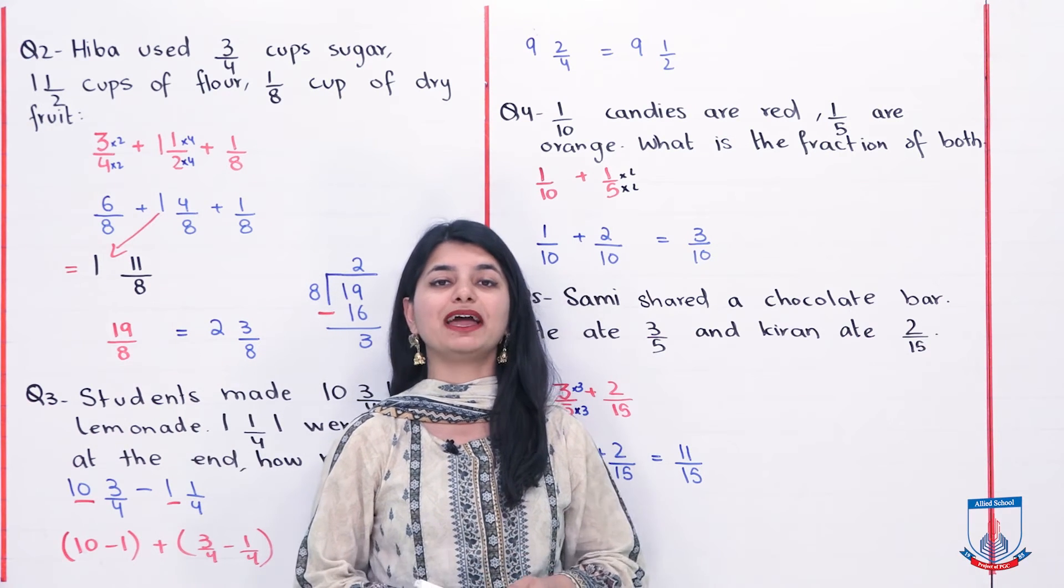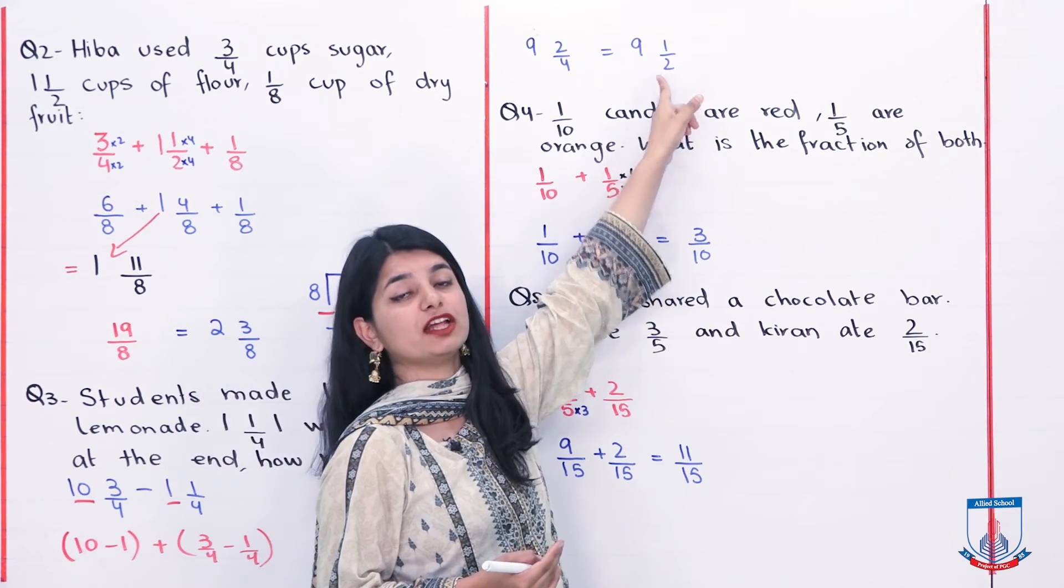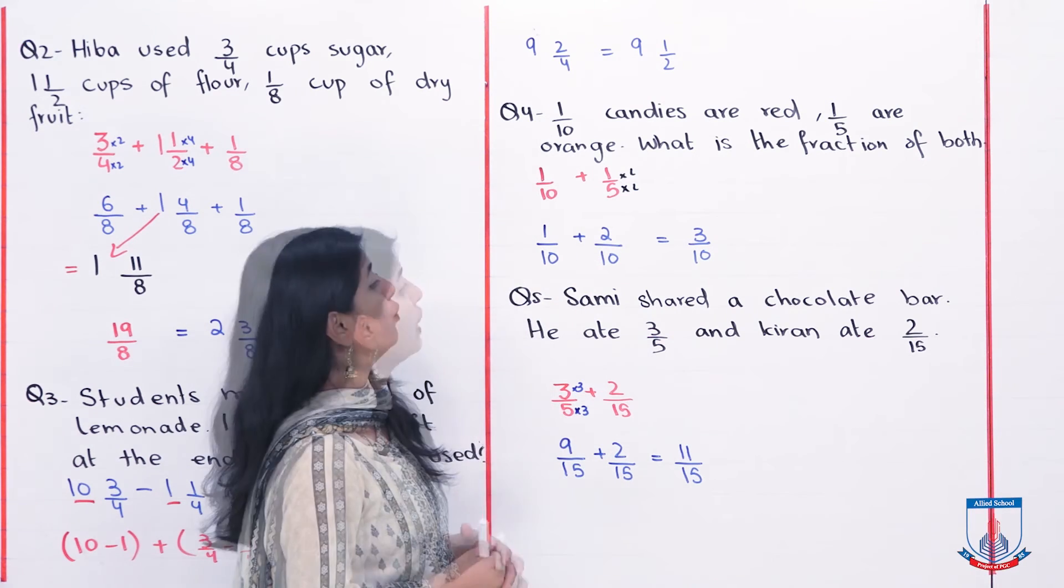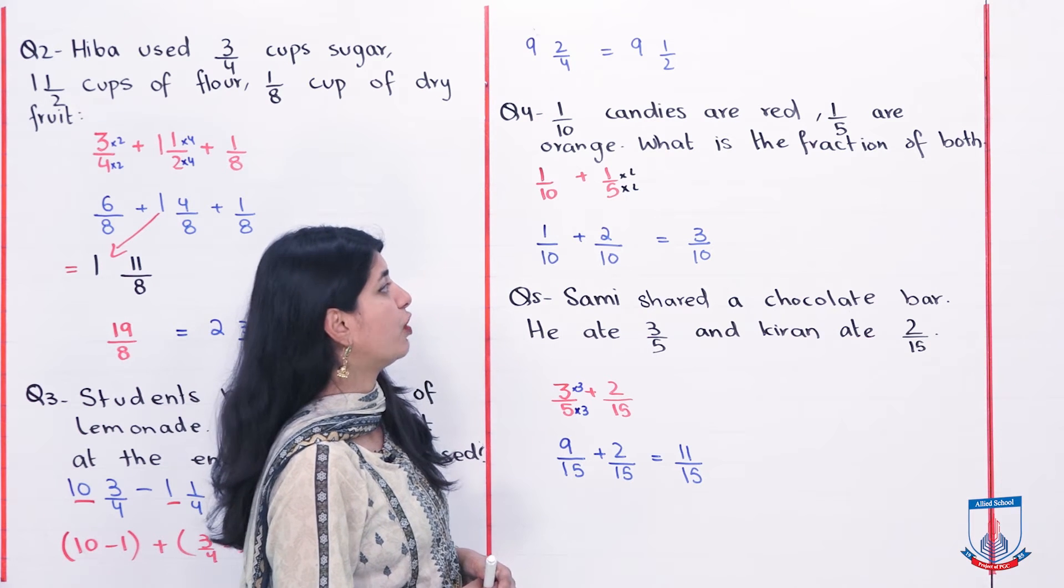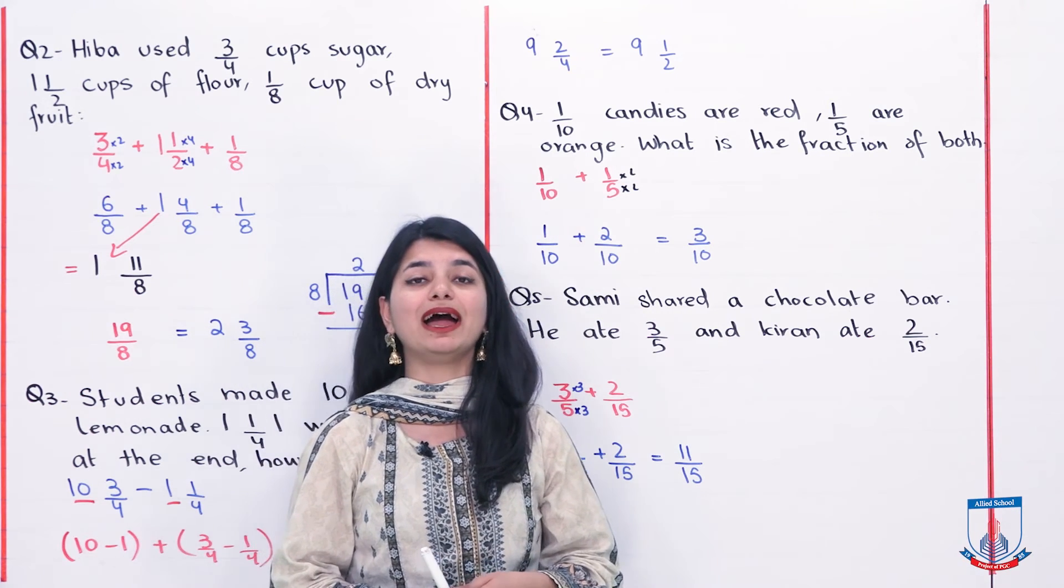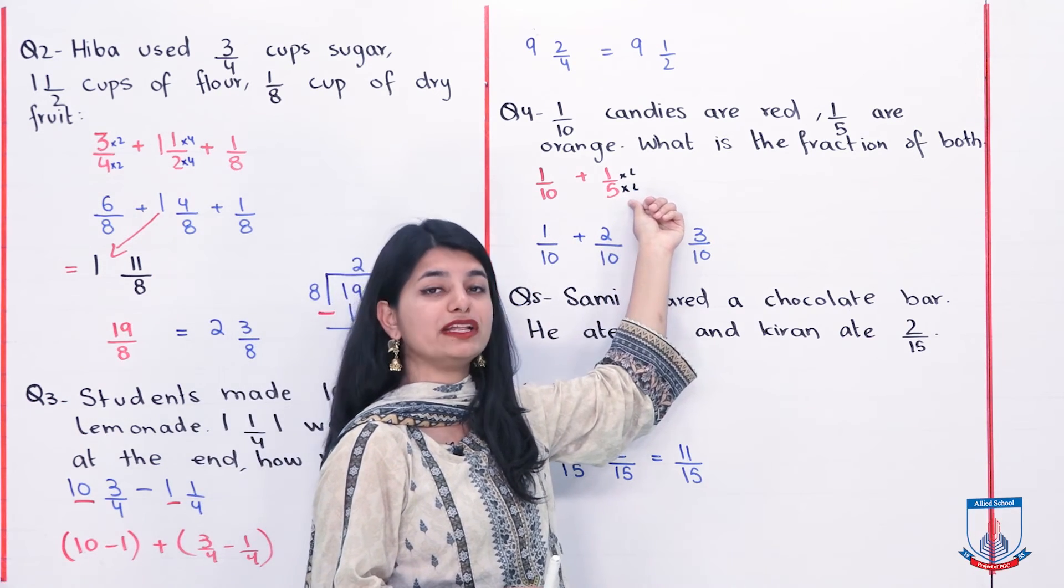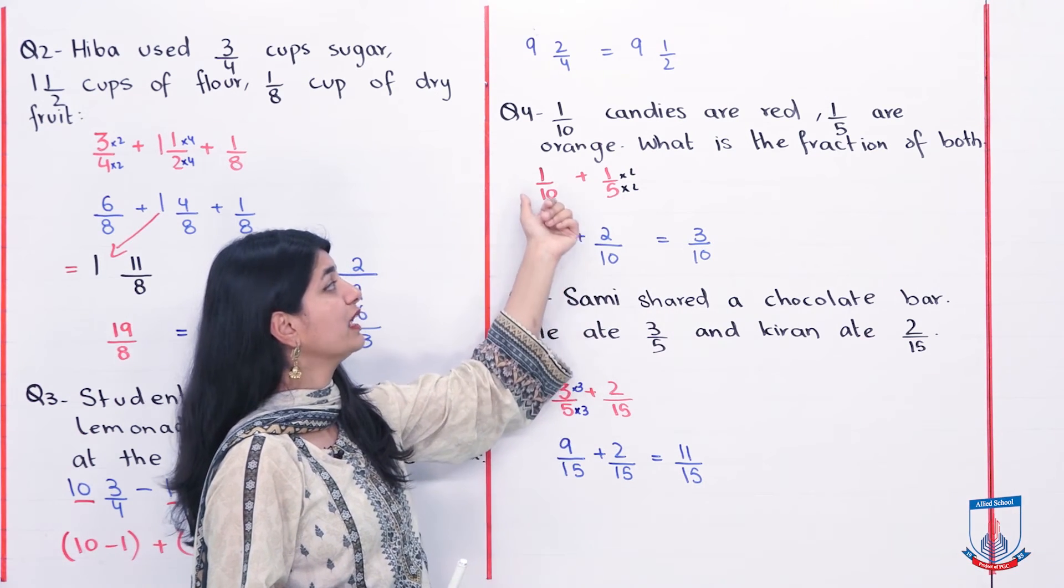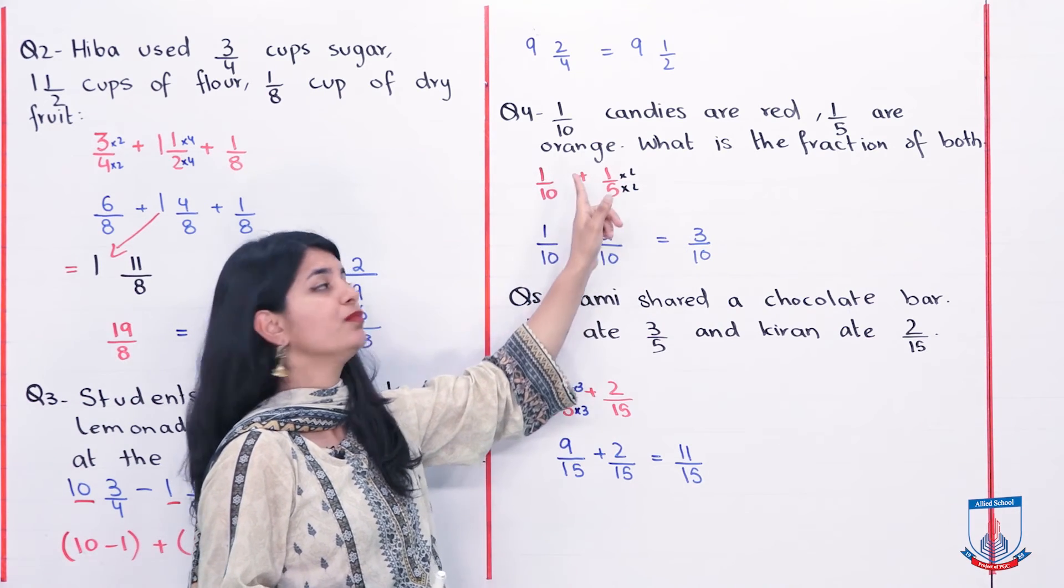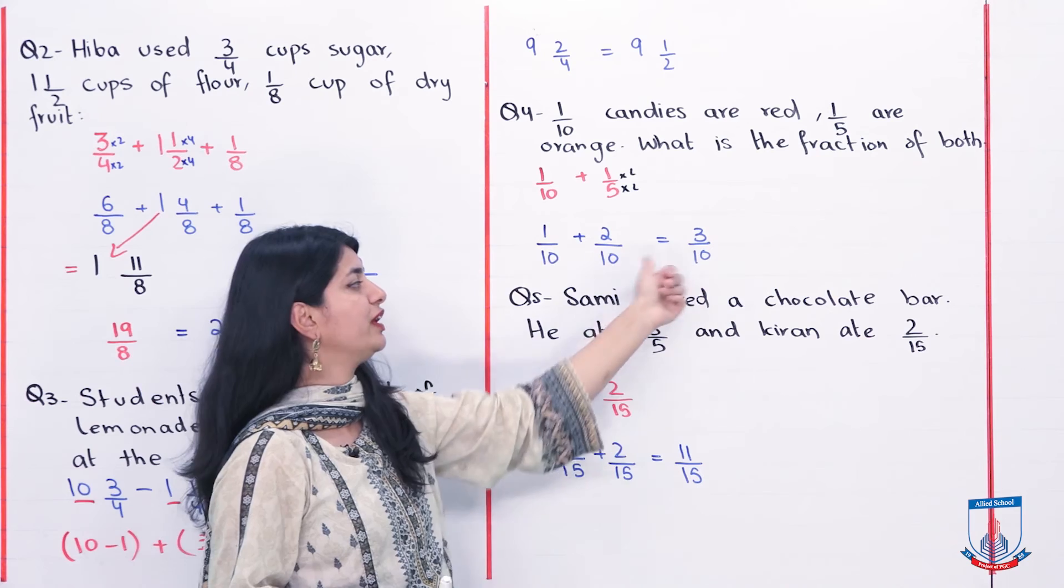The way is that whole numbers you have to subtract 10 minus 1. And when you have fractions you subtract. 10 minus 1 is 9. Very good. And 3 over 4 minus 1 over 4, denominator is the same. 3 minus 1 is 2 by 4. So 9 whole 2 by 4. But this could further be simplified. Yes very easily. 5 into 2 is 10, 1 is also multiplied by 2. So this becomes 2 by 10.